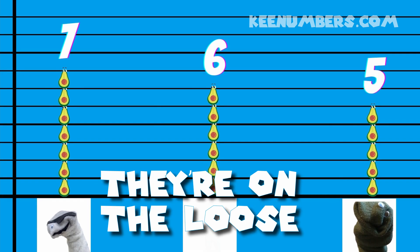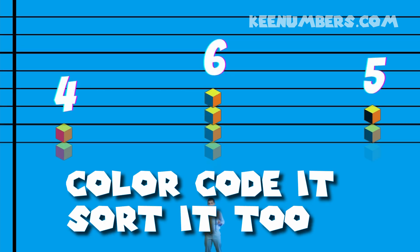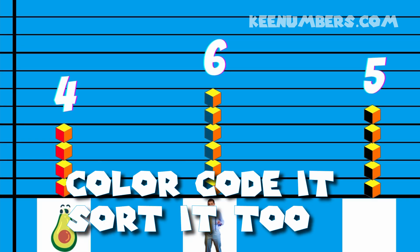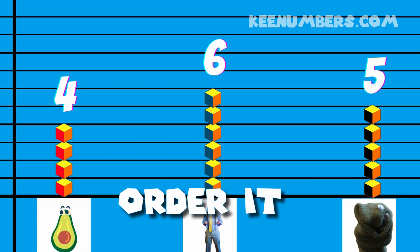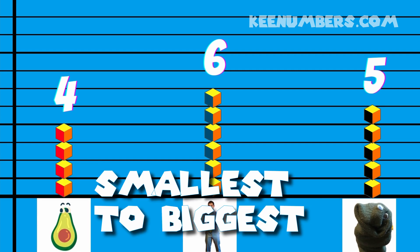The data is sorted too - figure out who's red or blue, order it smallest to biggest.